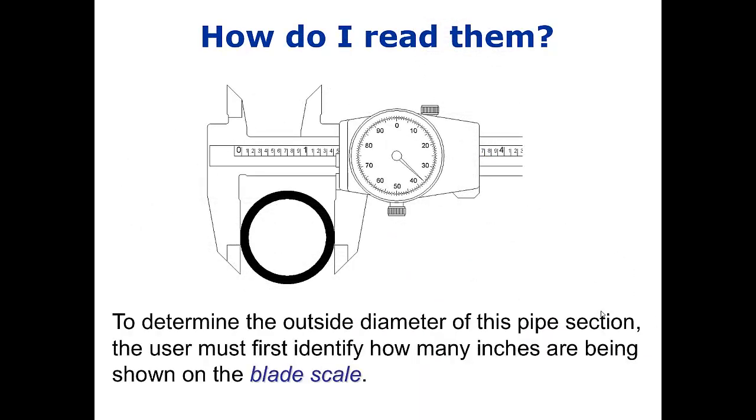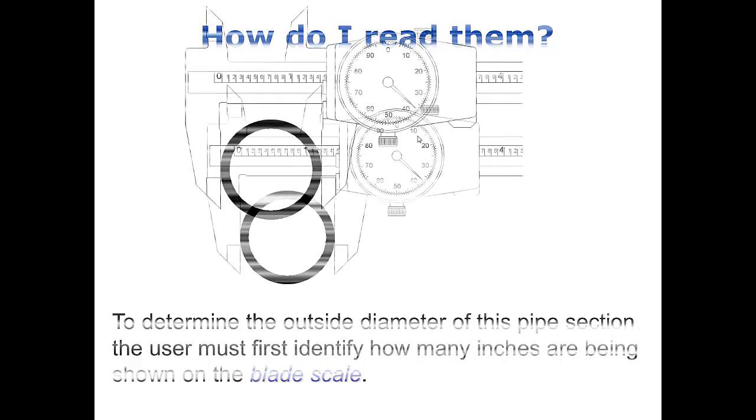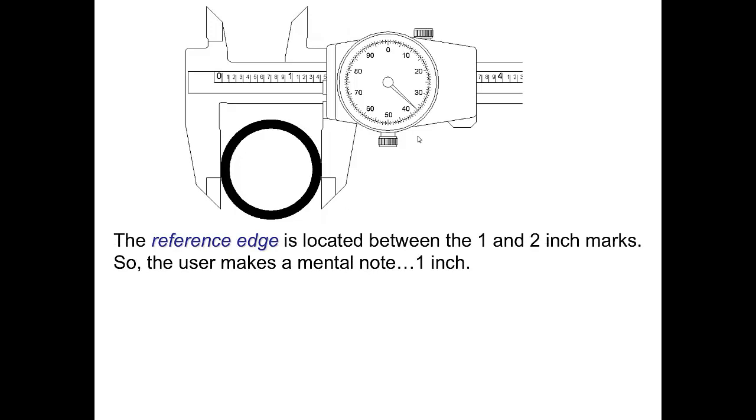So how do you read these things? Well first of all there are two parts. The first part is to look at the blade which is right here and then look at the dial. Notice up here on the blade there are numbers. There's big numbers and there are little numbers. Big numbers are inches. Little numbers are parts of inches. But one thing to remember is you never read the number unless the line behind it is fully visible.